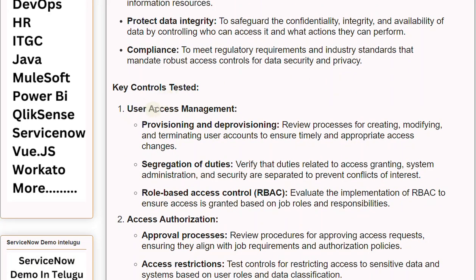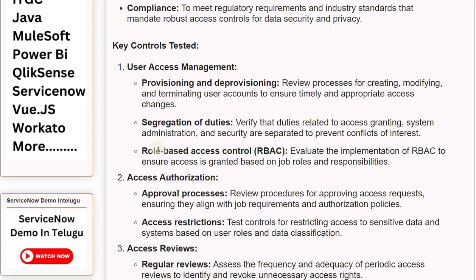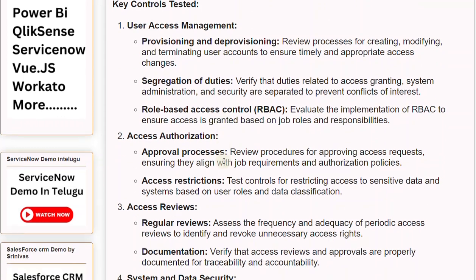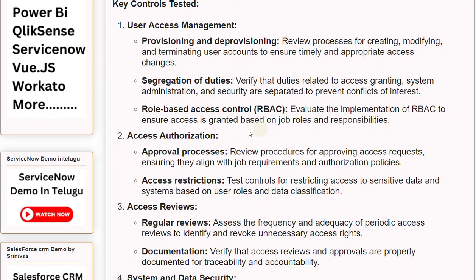Key controls tested. Number 1: User access management — provisioning and deprovisioning. Review processes for creating, modifying, and terminating user accounts to ensure timely and appropriate access changes. Segregation of duties: verify that duties related to access granting, system administration, and security are separated to prevent conflicts of interest. Role-based access control, RBAC: evaluate the implementation of RBAC to ensure access is granted based on job roles and responsibilities.